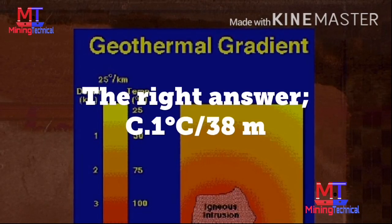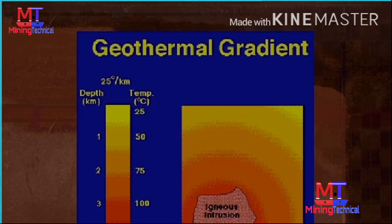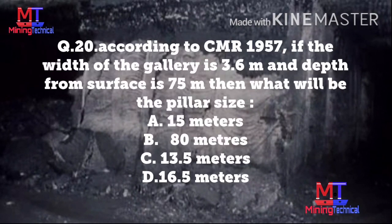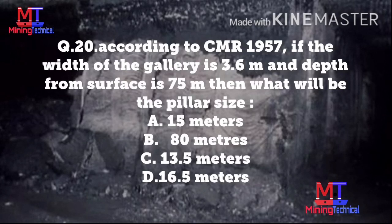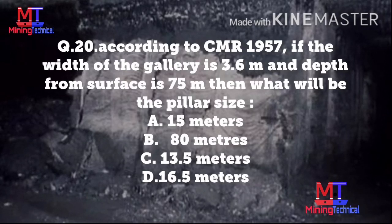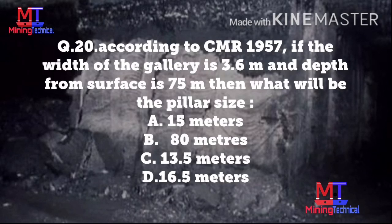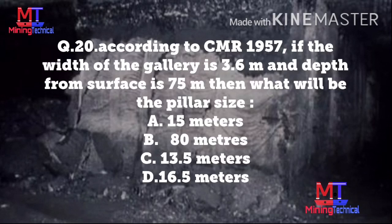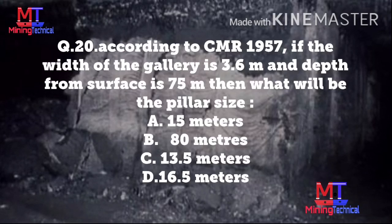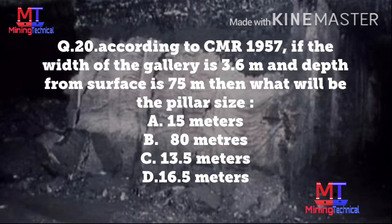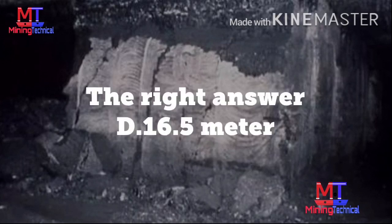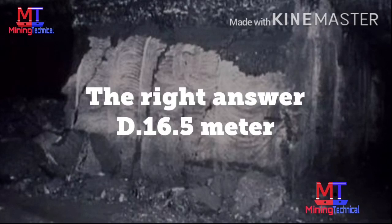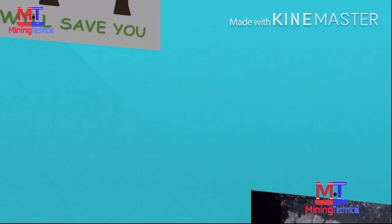Question number 20: According to Coal Mines Regulation 1957, if the width of the gallery is 3.6 meter and the depth from the surface is 75 meter, then what will be the pillar size? Option A: 15 meter, Option B: 18 meter, Option C: 13.5 meter, Option D: 16.5 meter. The right answer is Option D: 16.5 meter. Related regulation is Regulation number 99.